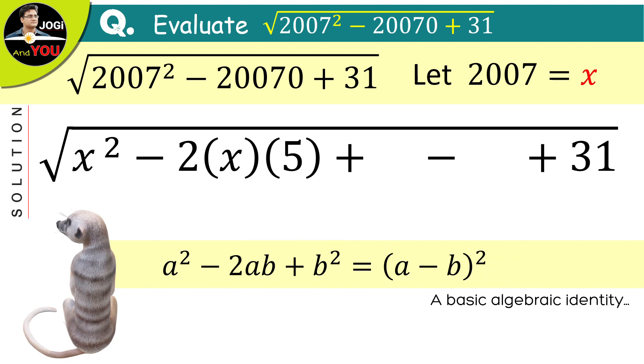Here, x is sounding like a and 5 as b. So according to this, instead of b square, there should be 5 square which means 25 at this place.